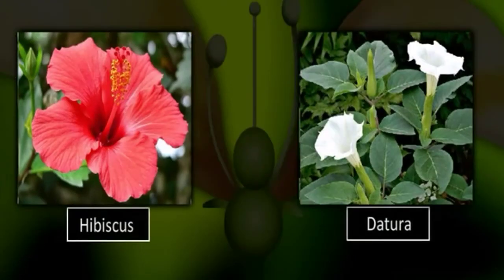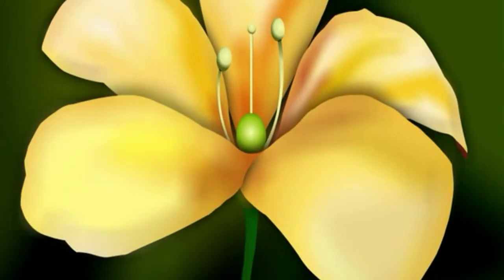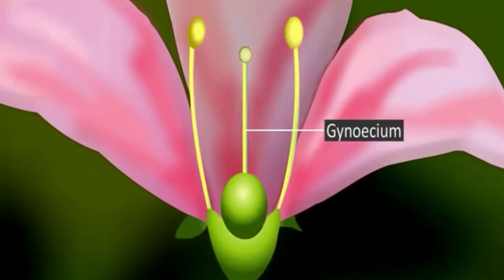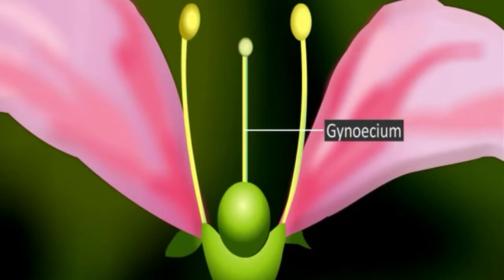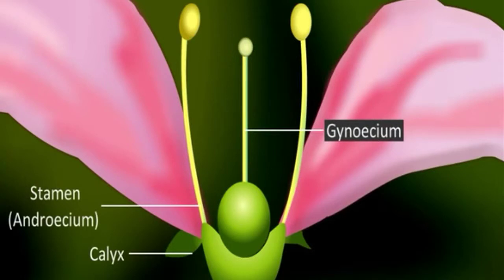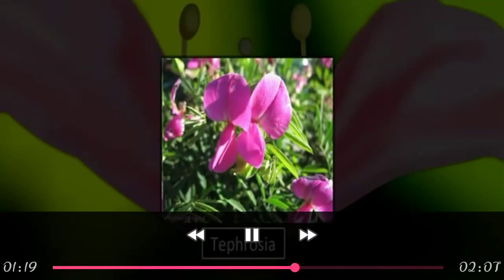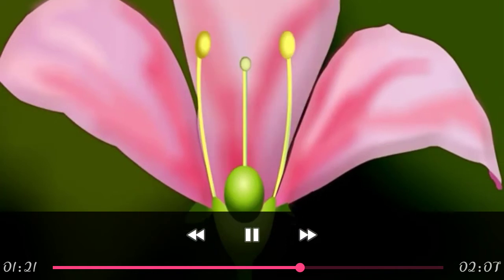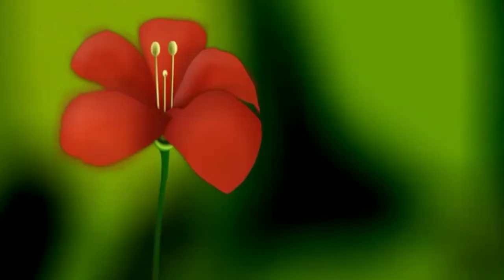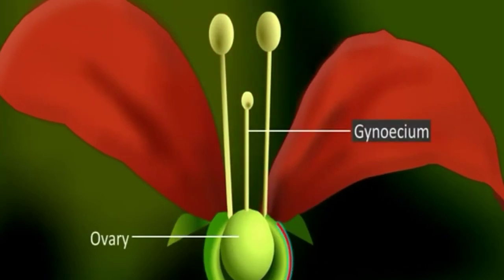Examples include hibiscus and datura. In perigynous flowers, the gynoecium is located centrally in the thalamus. The remaining floral parts — calyx, corolla, and androecium — are arranged along the margins. In this flower, the ovary is present partly inside and partly outside the thalamus, so the ovary is called half inferior and half superior. An example is tephrosia.